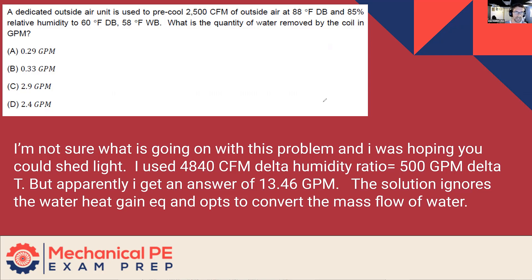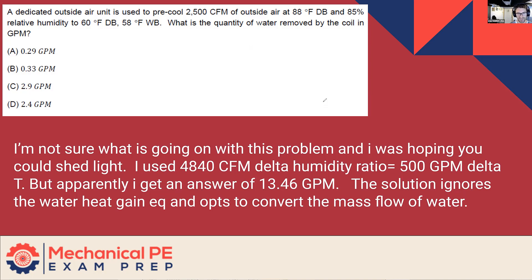A dedicated outside air unit is used to pre-cool 2500 CFM of outside air at given conditions of relative humidity. The question asks: what is the quantity of water removed in the coil in GPM? I'm not sure what's going on in this problem — I was hoping you could shed some light. I used 40-40 CFM delta humidity ratio equals 500 GPM delta T, but apparently I get an answer of 13.46 GPM.